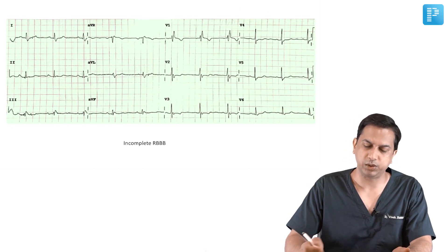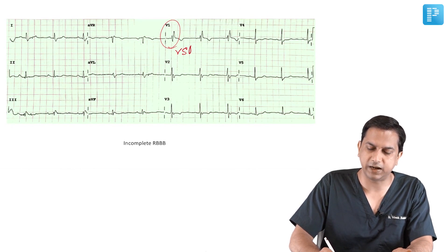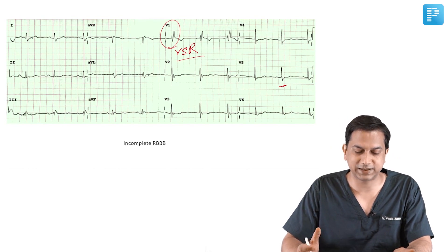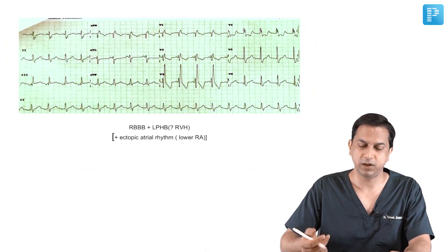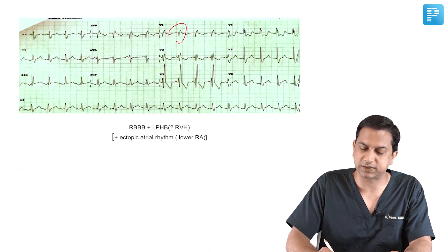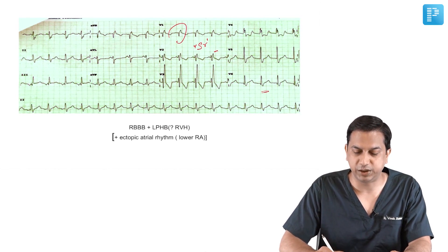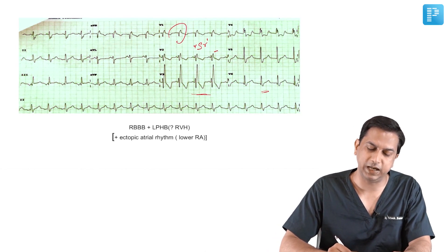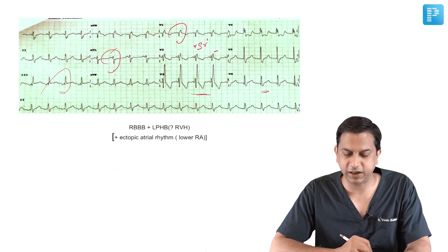For example here, you have an RSR' pattern with a small r, small s, and large R'. You can see the slurring in the S wave. The axis is normal, but the QRS duration is less than 120 milliseconds, so we call this an incomplete right bundle branch block.